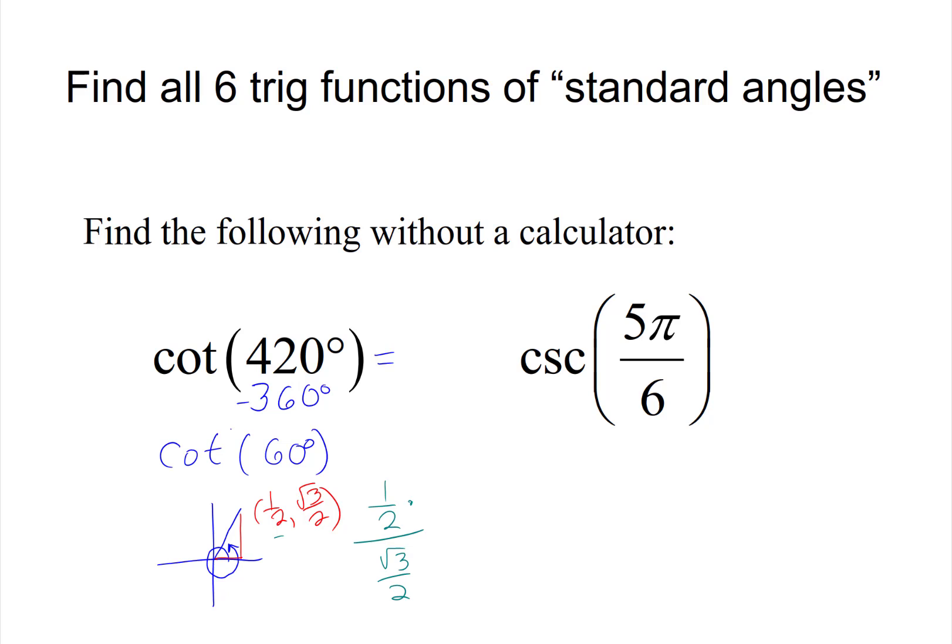Now let's go ahead and simplify that. We'll flip the bottom one over and multiply it here, and the twos will cancel, so it looks like my answer is 1/√3. You can rationalize that, but there's no need to.